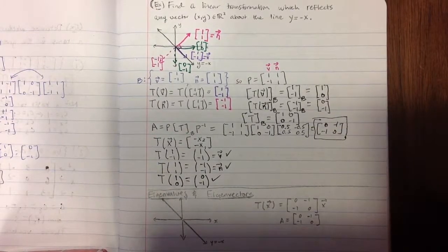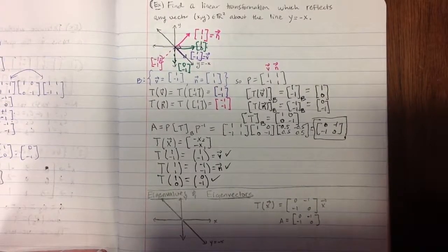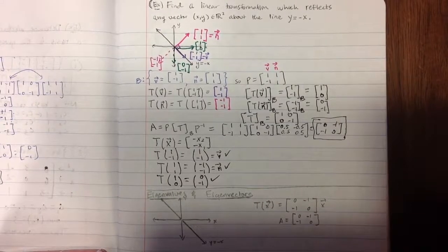Hello. As you may recall, last time we found a linear transformation which reflected a vector in R2 about the line y equals negative x.